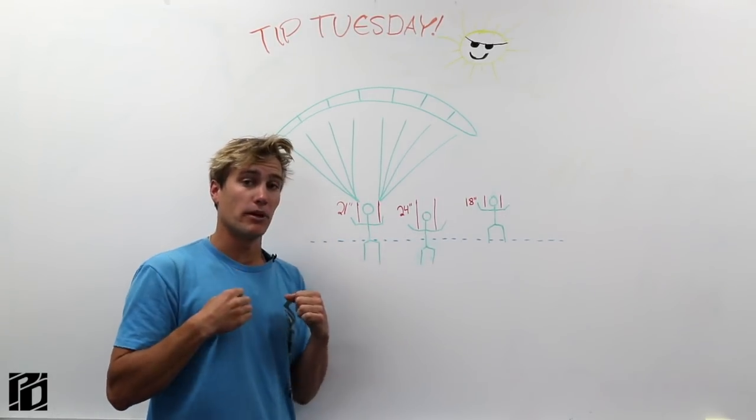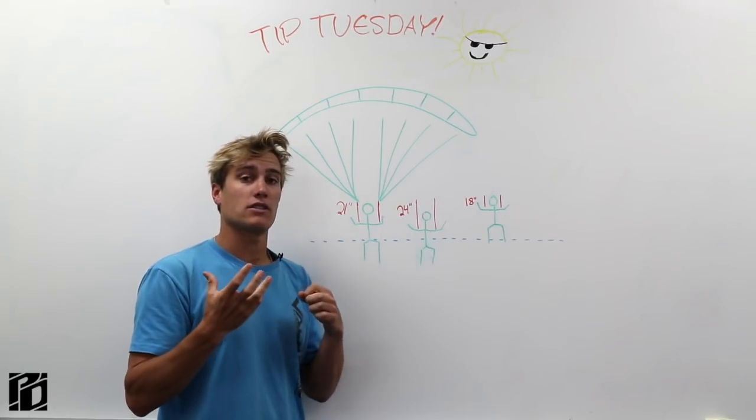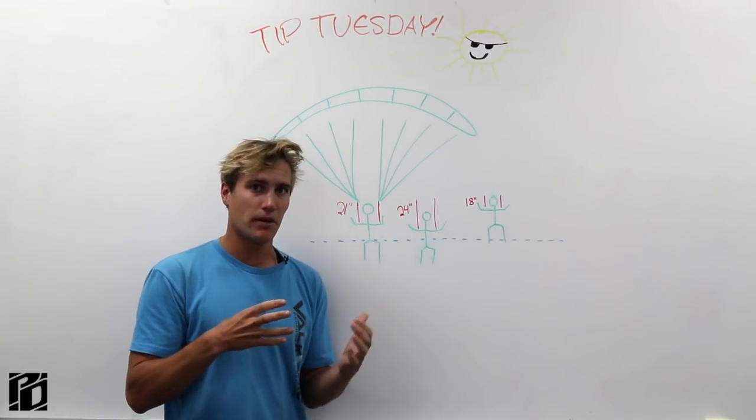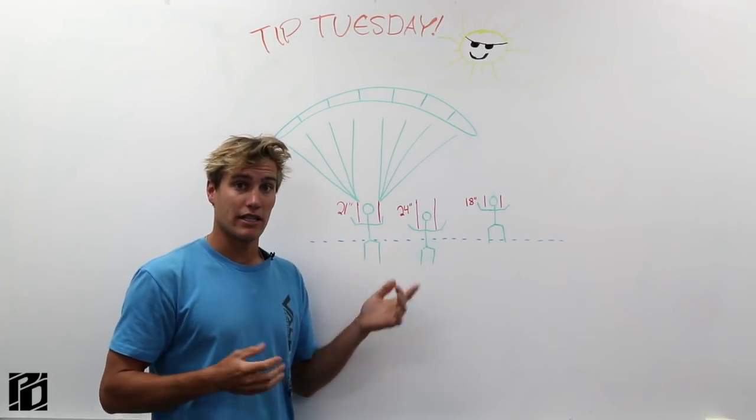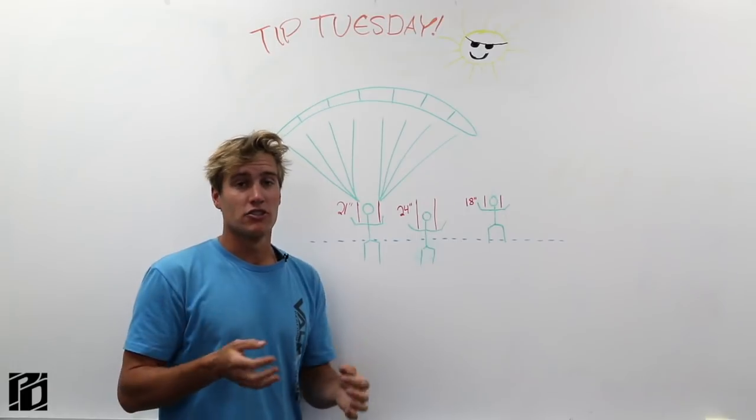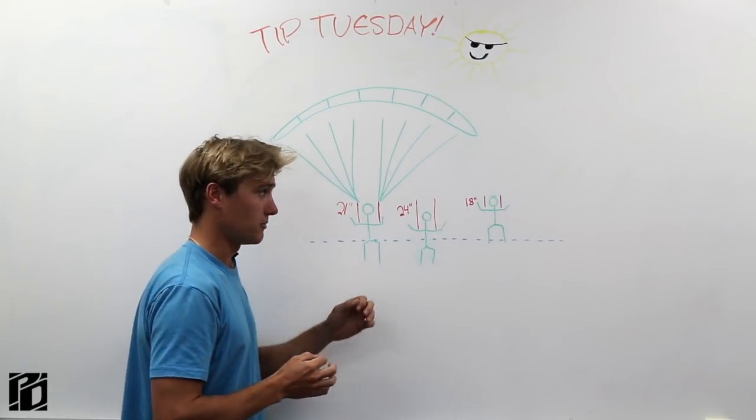So there's something to keep in mind: as you lengthen your risers, your inputs or your response from the parachute given a certain input are going to happen a little bit quicker. Also, that means that your stall point is going to be three inches higher as well. So there's a safety tidbit there too.